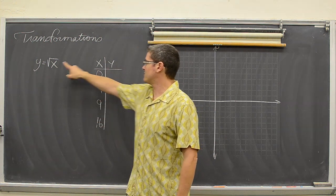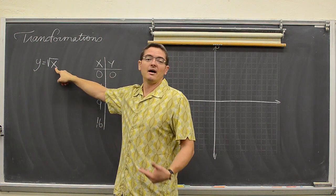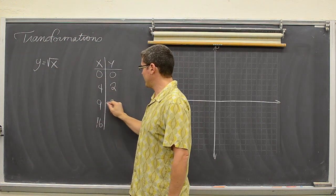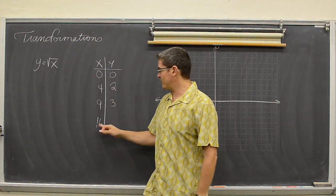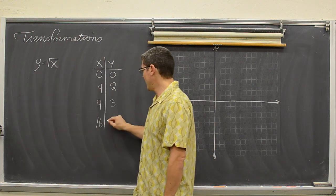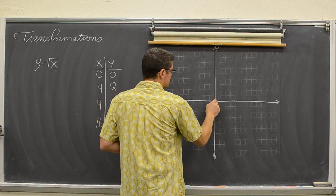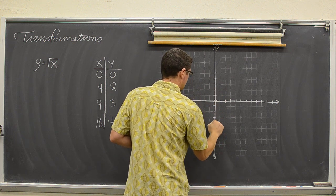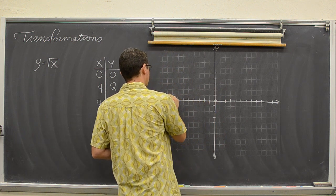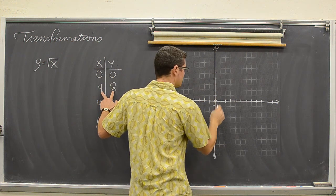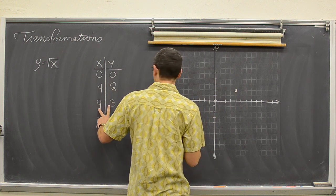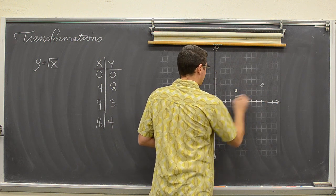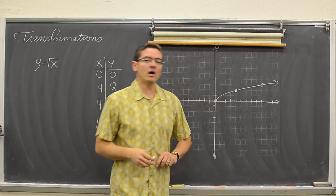If I plug in zero for x, I get the square root of zero which is zero. If I plug in four, I get the square root of four which is two. If I take nine, the square root of nine equals three. And if I take sixteen, I get the value of four. So plotting these points — (0,0), (4,2), (9,3) — here we have our parent function y equals the square root of x.